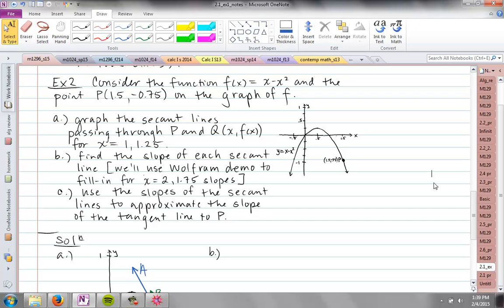Part A: graph the secant lines passing through P and Q, where Q is (x, f(x)) for x = 1 and 1.25. You have similar notation in your homework - you're just plugging in the given x. The first one is 1, then find f(1) to figure out what that point Q is. We're always using point P, but Q changes depending on the values we choose close to the x-coordinate of 1.5, which is where P is.